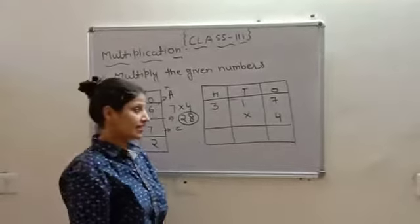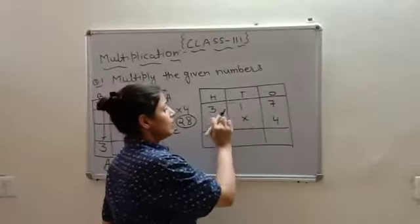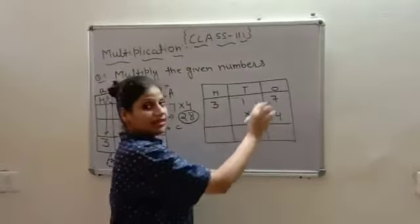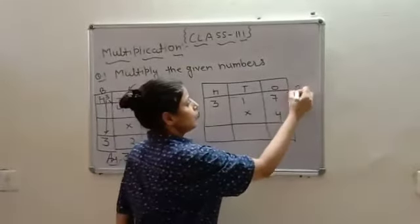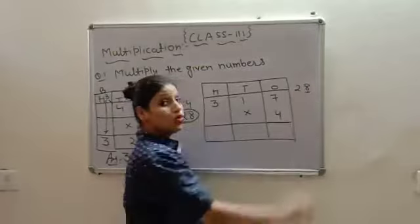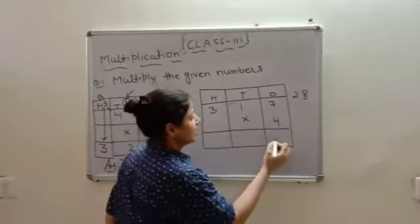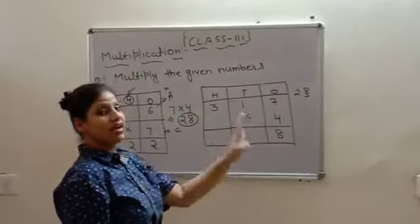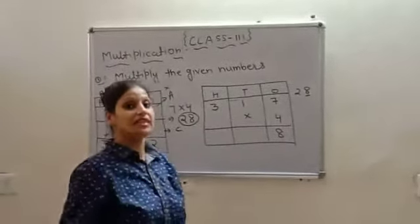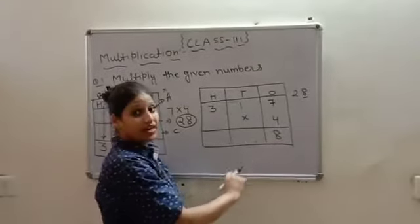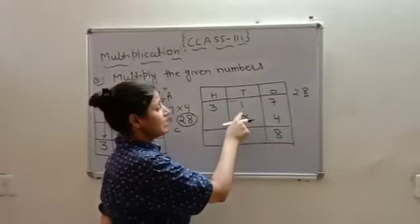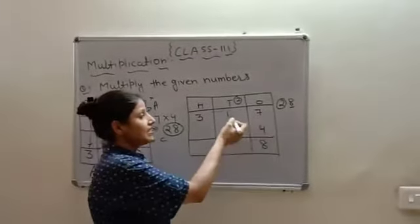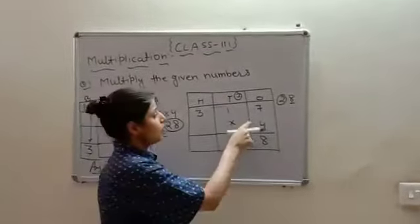In the next question, let's do once again. 370 multiplied by 4. Let's do it. 4 sevens are 28. But, as we know, only one's place will be here at one's place. This is nothing new we are doing. This is all we have done in addition also. That how do we place numbers. Okay. So, 8 came here. Now, 4 ones are 4.